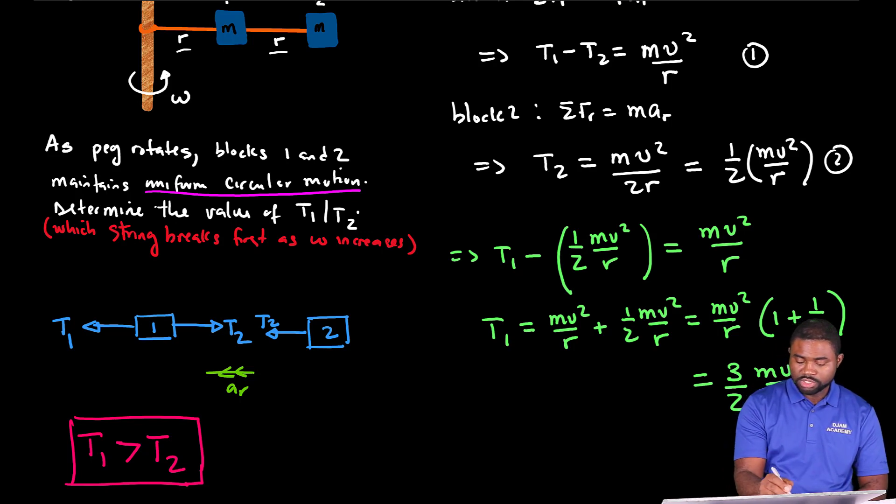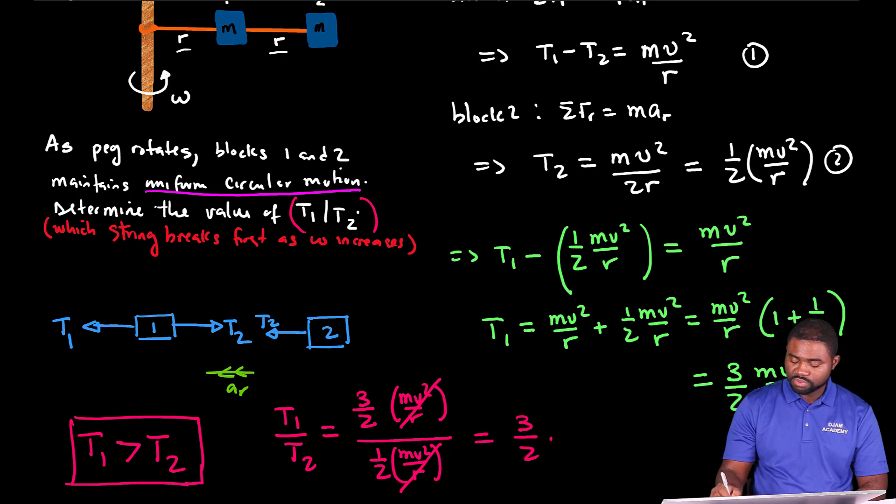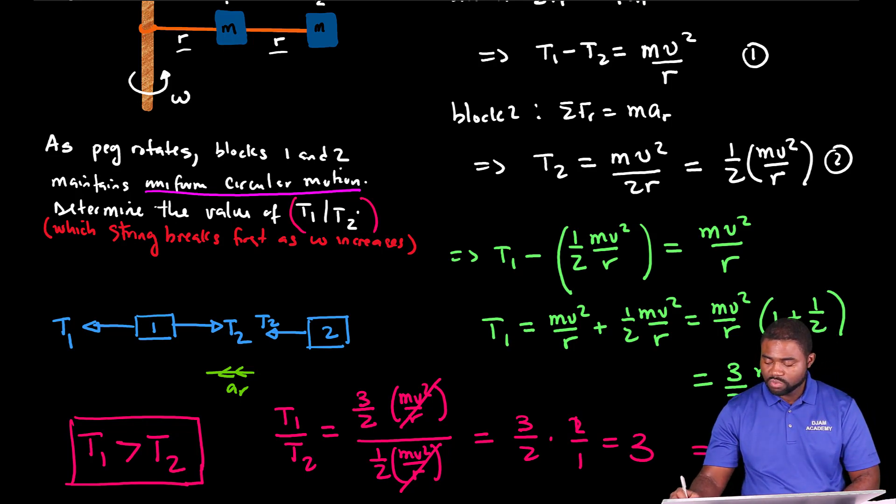So the question was to calculate this ratio. T1 divided by T2 will be equal to 3 over 2 MV squared over R divided by one half MV squared over R. This takes care of this and this is equal to 3 over 2 multiplied by 2 over 1 which is equal to 3. In essence, we are saying that T1 is equal to 3T2.